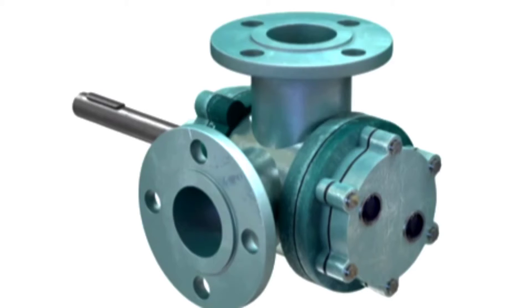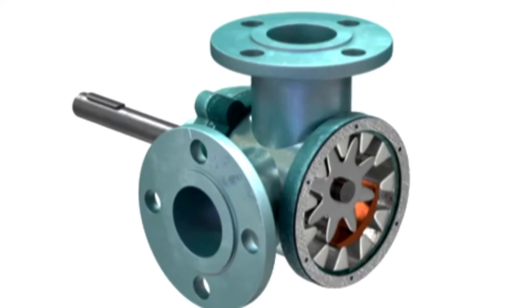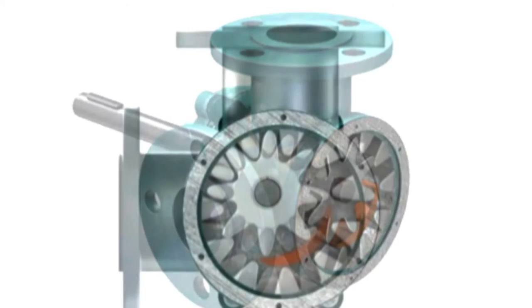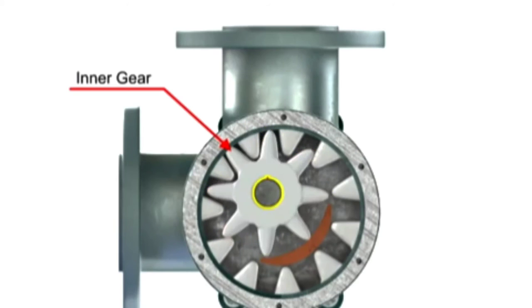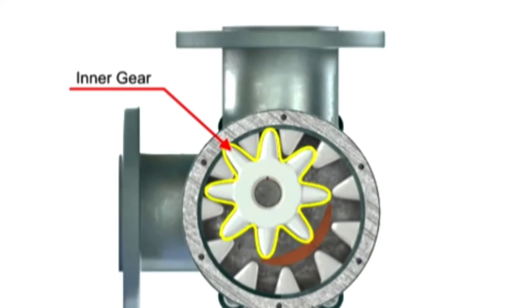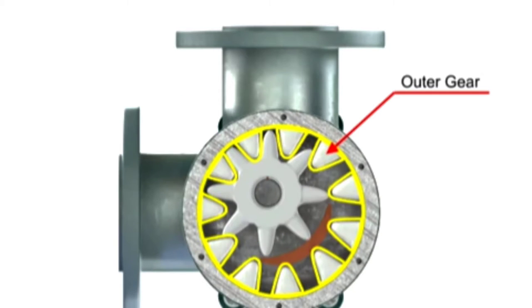Internal gear pumps are exceptionally versatile. This type of pump has one inner gear which is inside a second outer gear. The inner gear has a shaft driven by a motor and has teeth that protrude outward. The outer gear has teeth that protrude inward toward the center of the pump.